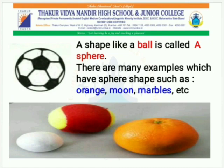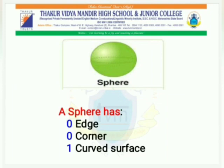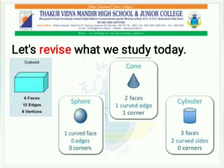Next, a shape like a ball is called a sphere. There are many examples which have sphere shapes, such as an orange, moon, marble, etc. So, a sphere has zero edges, zero corners, and one curved face.